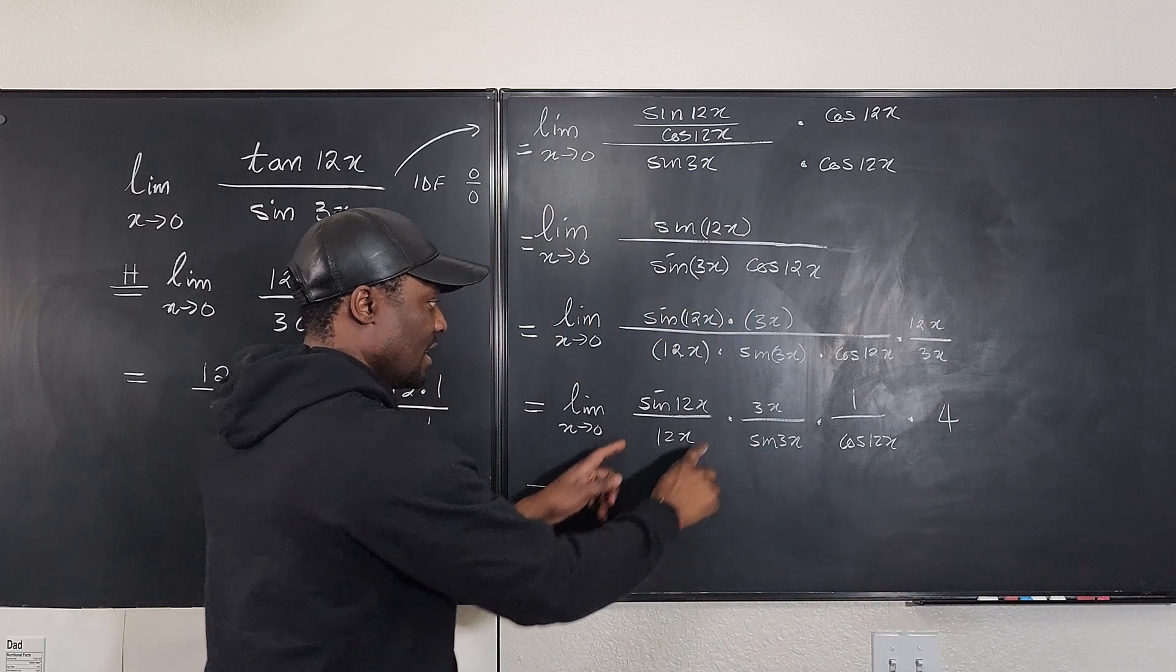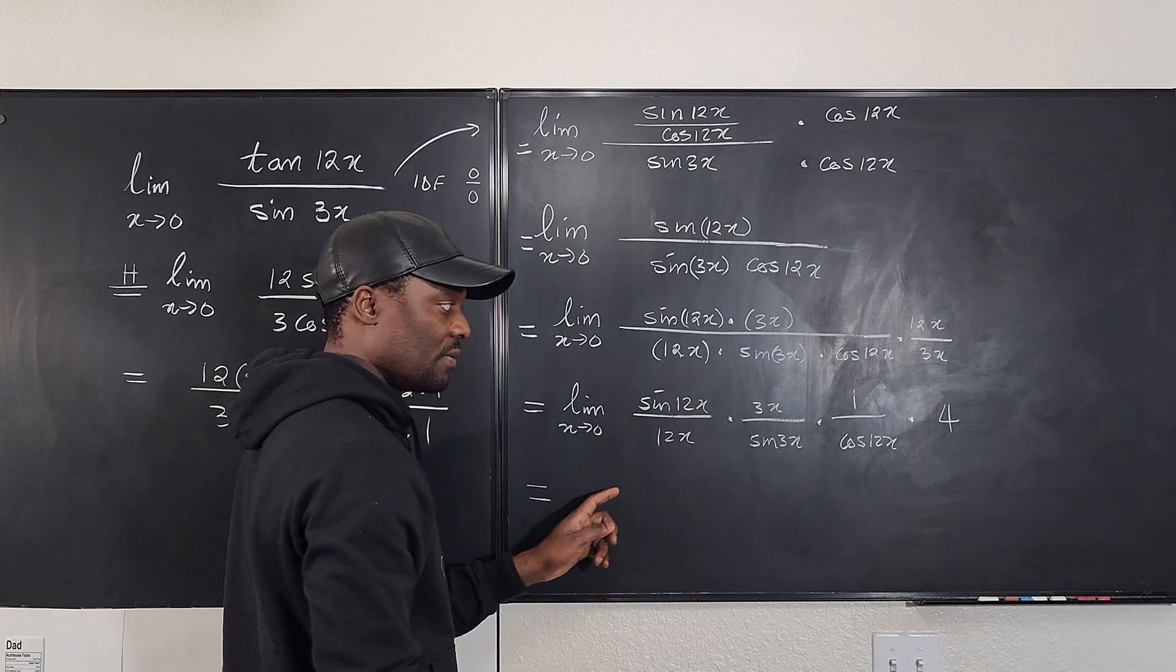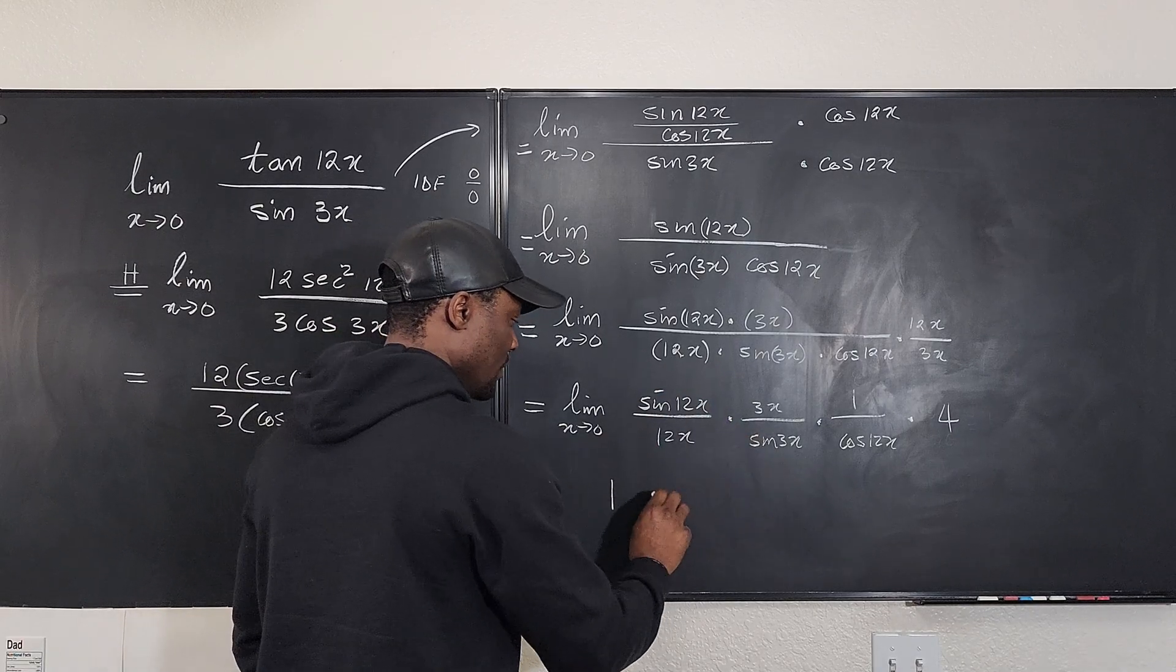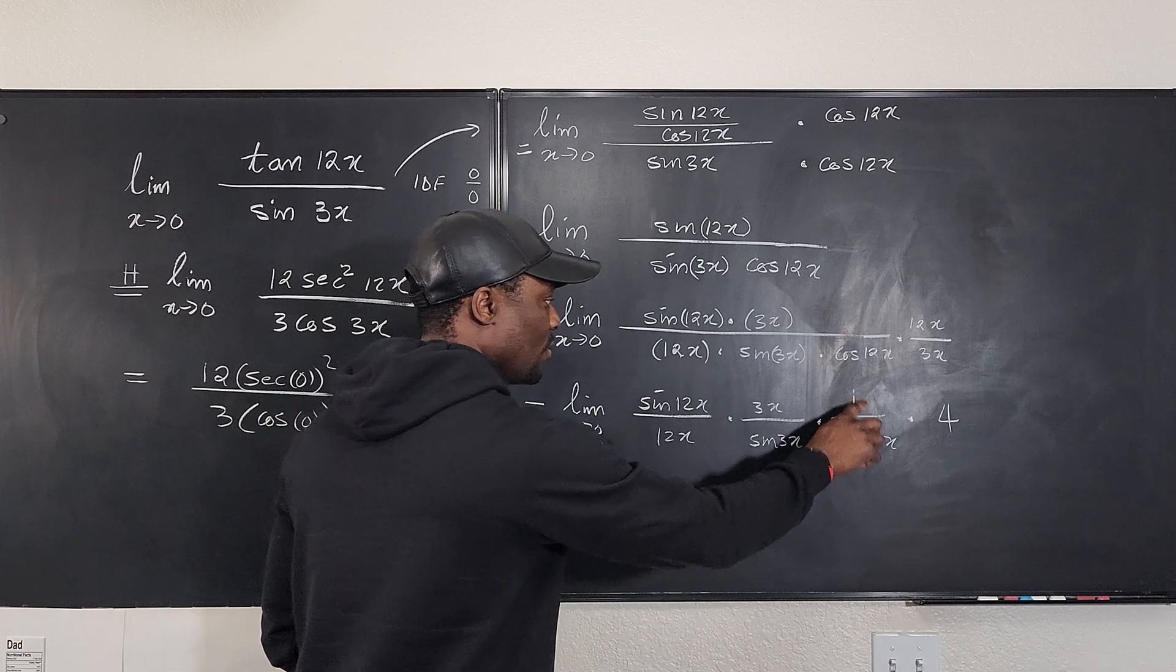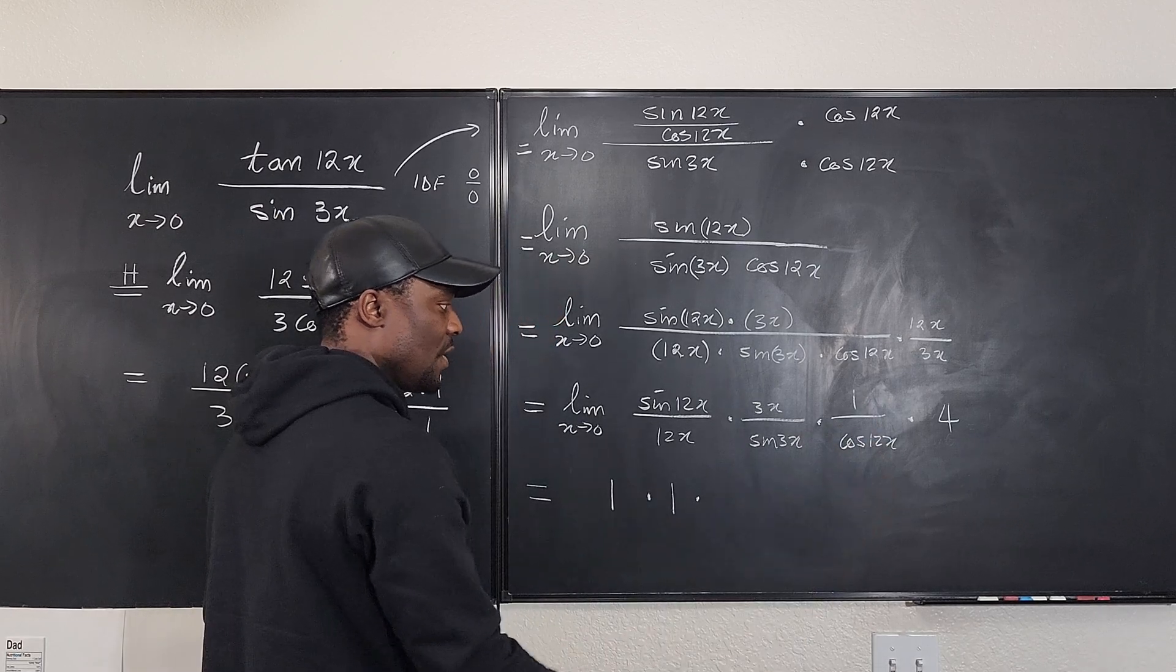Well, as you can see, the limit of this, if you apply the product rule for limit, this is going to be one, this also goes to one, this is one over, as this goes to zero, this is going to be one, and you multiply by four, so that your answer is four.